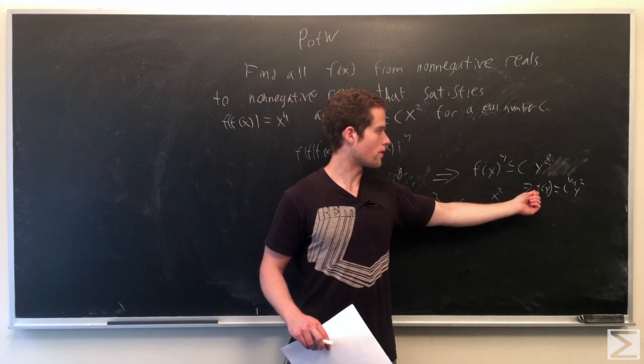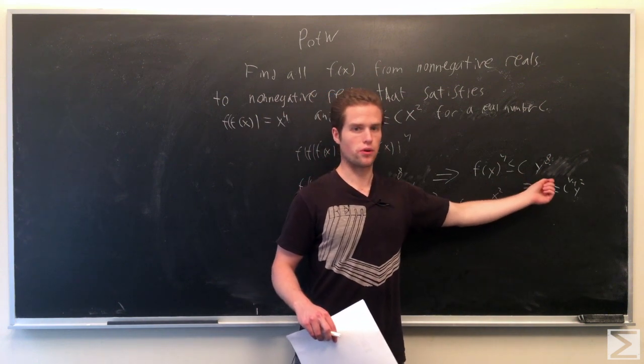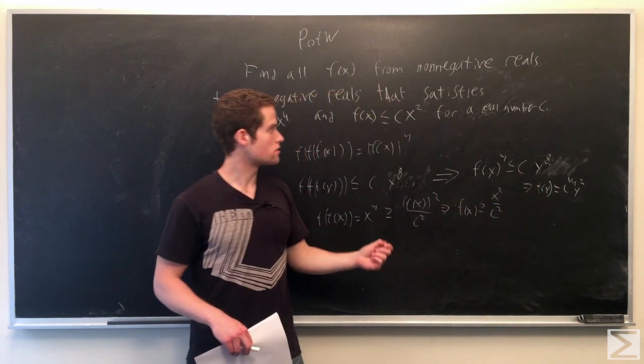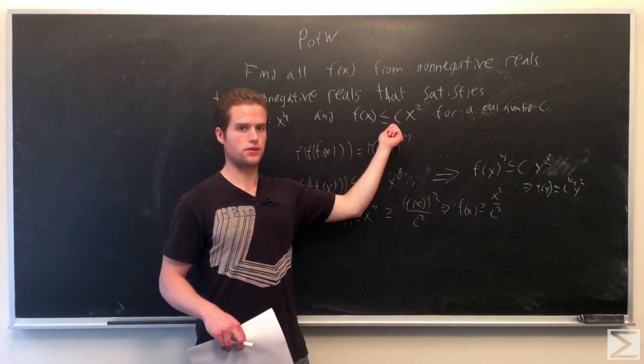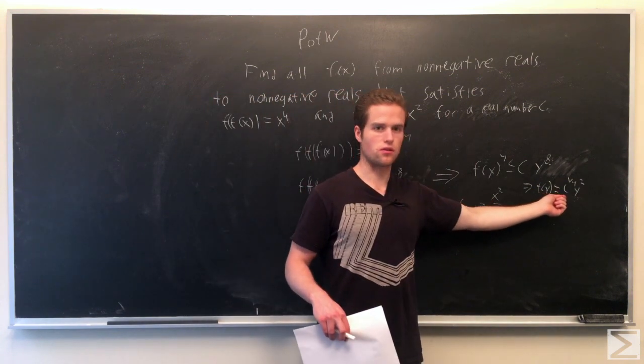Taking the 4th roots, we have f of y is less than or equal to c to the 1 4th, y squared. So this is interesting because if our inequality is satisfied for c, it's also satisfied for c to the 1 4th.